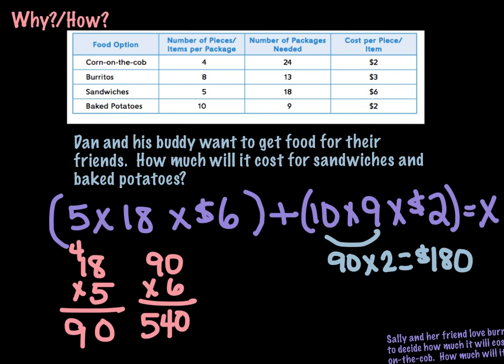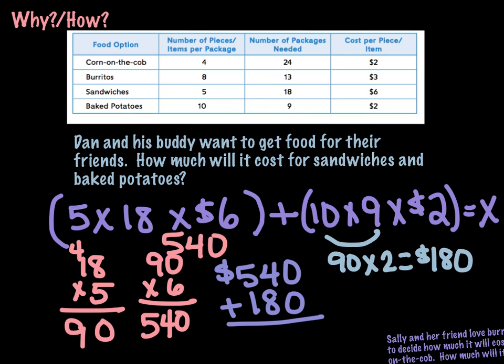And then all I have to do is add my 540 plus my 180, and this is all money, so I'm going to put my dollar sign, I add those together, and I get $720.